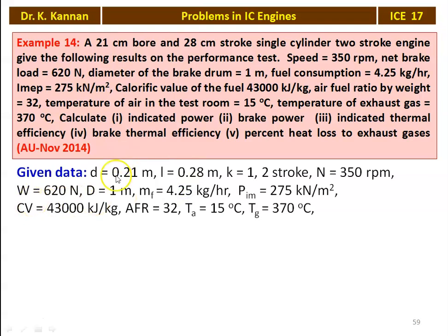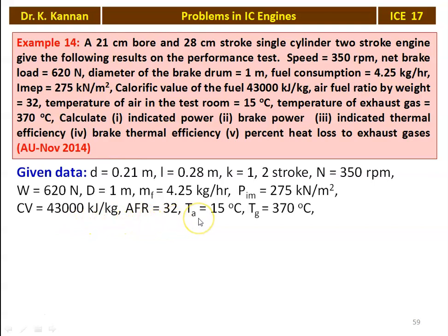We write down the given data: diameter equal to 0.21 meter, stroke length equal to 0.28 meter, number of cylinders K equal to 1, it is a two-stroke cycle engine, speed equal to 350 RPM, load on the brake drum 620 Newton, diameter of the brake drum 1 meter, mass of the fuel 4.25 kilograms per hour, indicated mean effective pressure 275 kilo Newton per meter square, calorific value of the fuel 43,000 kilojoules per kilogram, air-fuel ratio 32, air temperature in the room 15 degree Celsius and the gas temperature 370 degree Celsius.